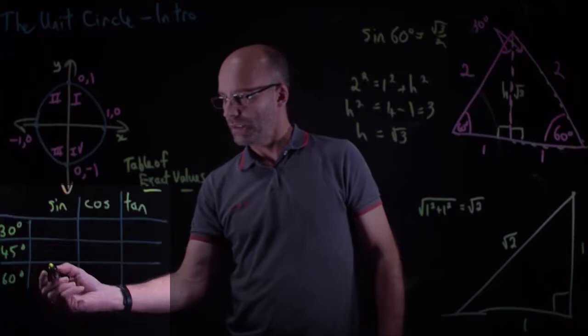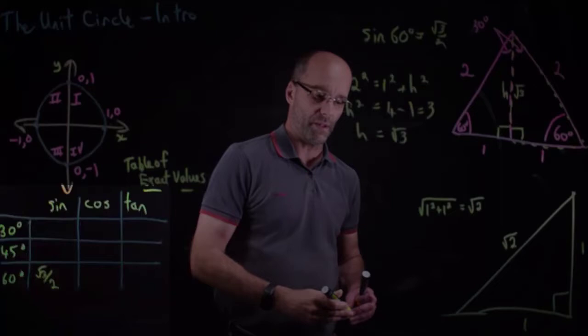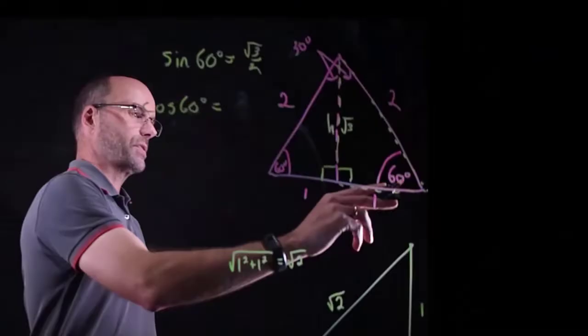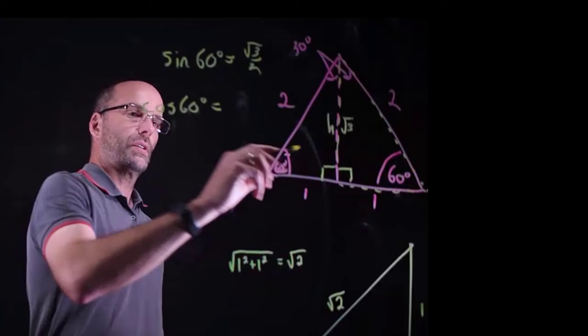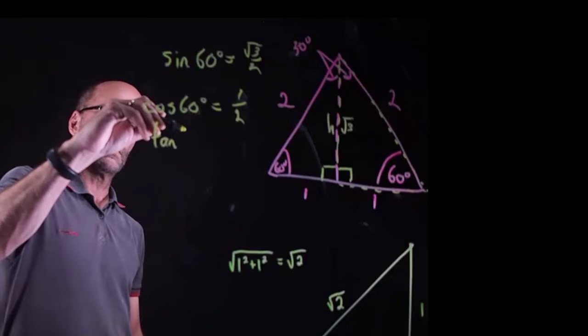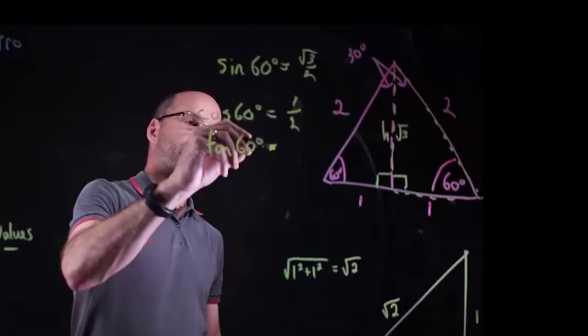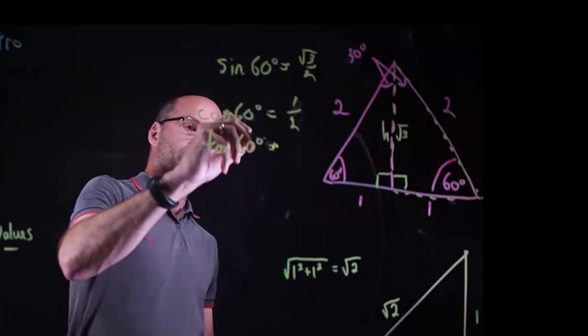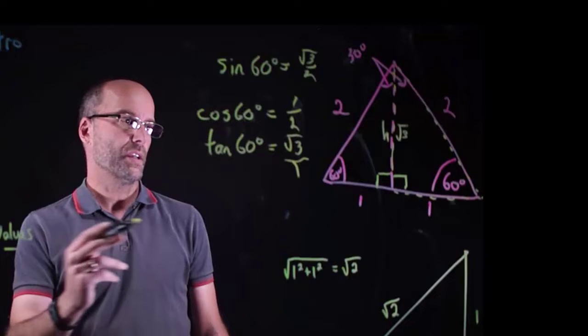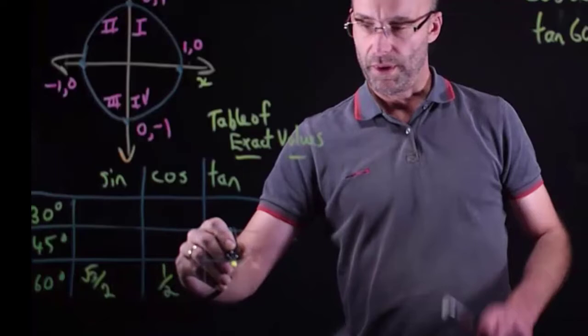We can repeat that for cosine and tangent. Cosine 60° is adjacent over hypotenuse, which is 1/2. Tan 60° is opposite over adjacent, which is √3 over 1, which is just √3.